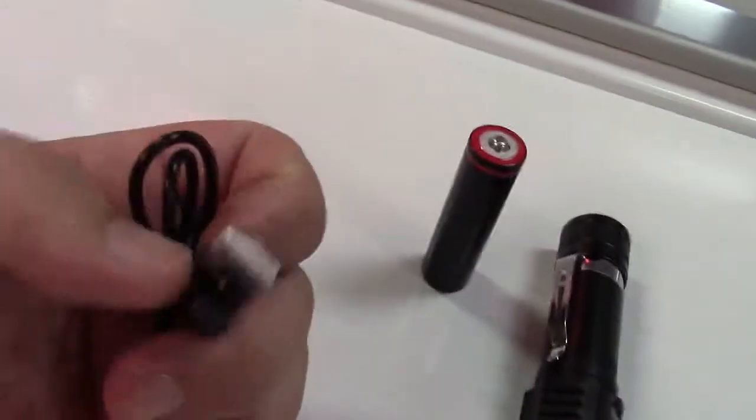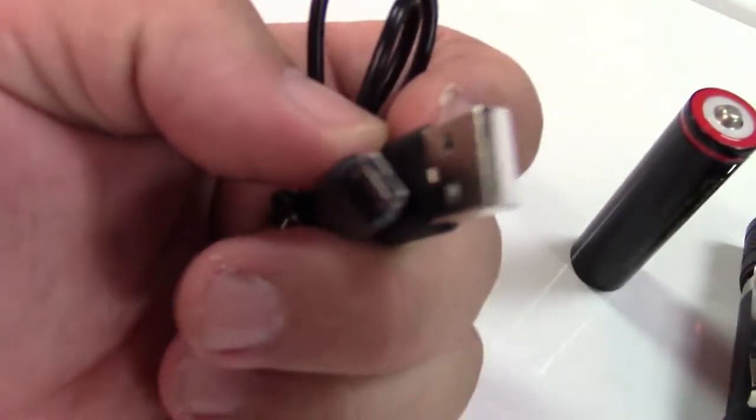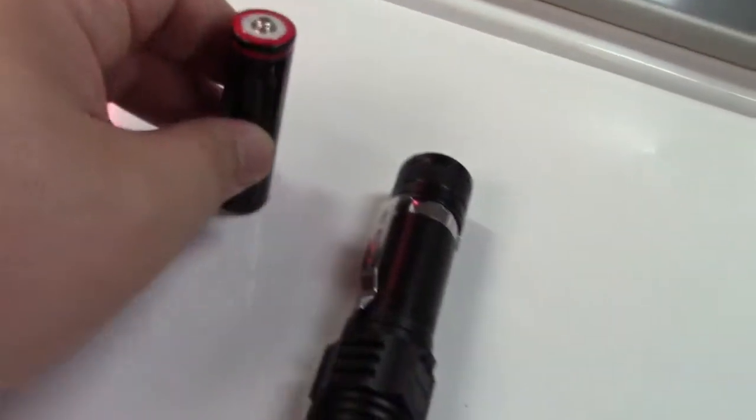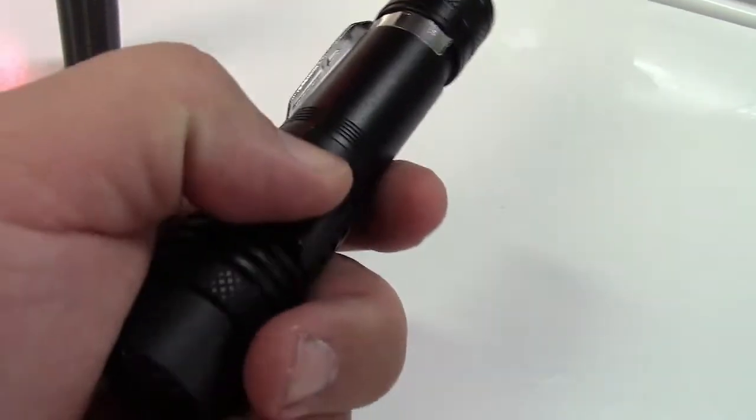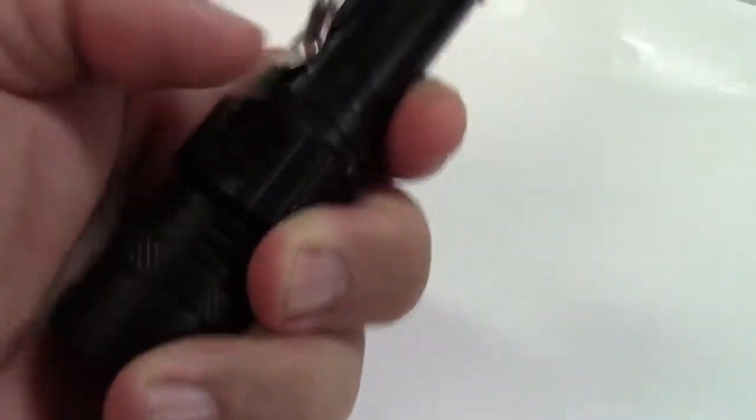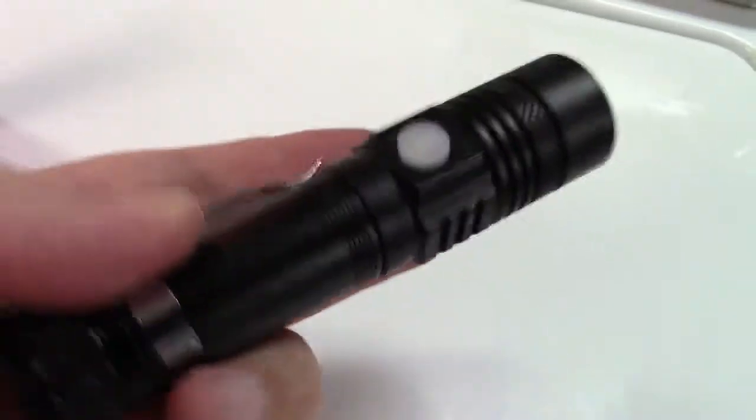You have the USB charging cable, which is USB to micro USB, an 18650 rechargeable battery, and over here is the flashlight itself, your charging port, there's a clip to put it on a shirt pocket, this unscrews to put the battery in, there's the button to turn it on and off and select the different modes.